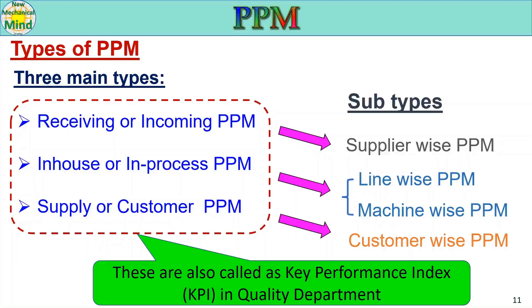These three main types — receiving, in-house, and customer PPM — are called Key Performance Indicators, or KPIs, for the quality department. Controlling these three PPMs is the main KPI for any quality department in manufacturing and production industries. Next, we are going to see about these PPMs in detail.